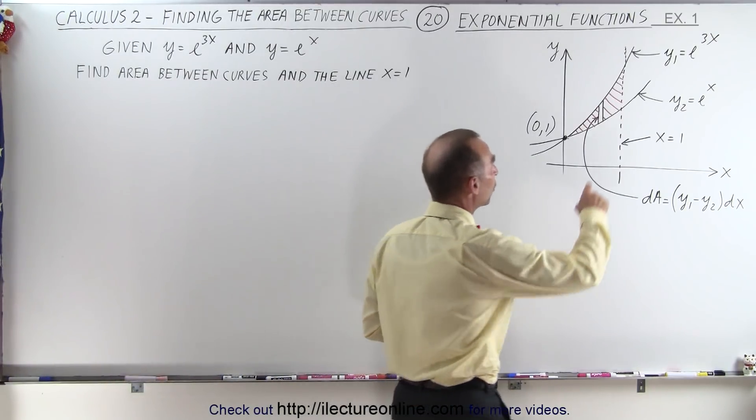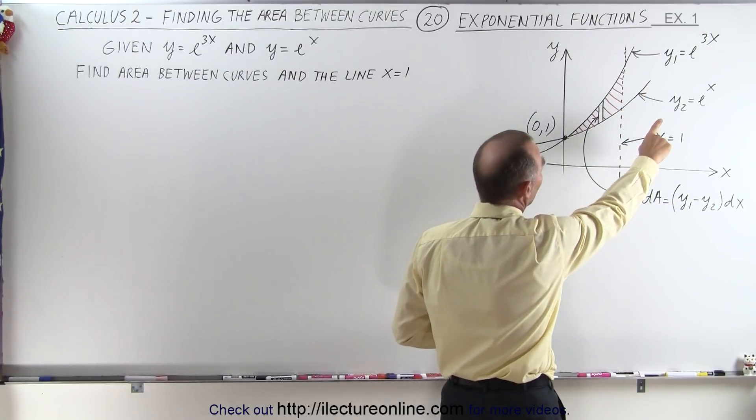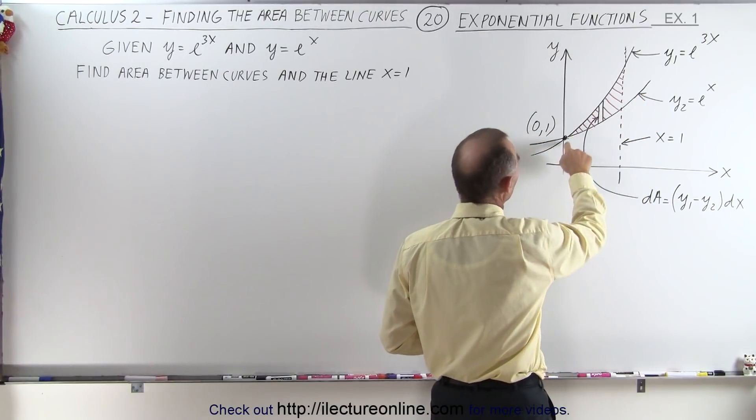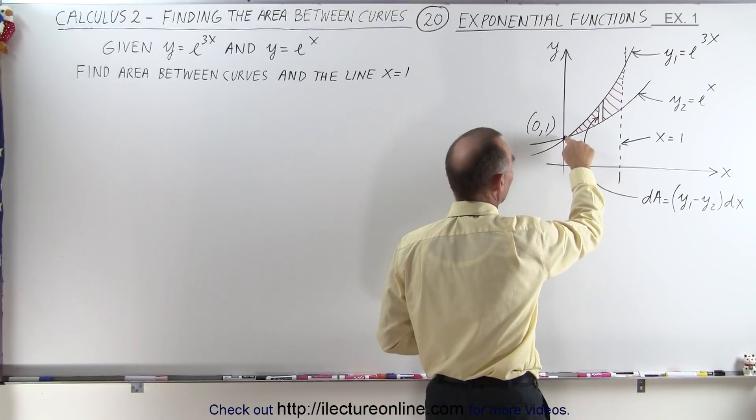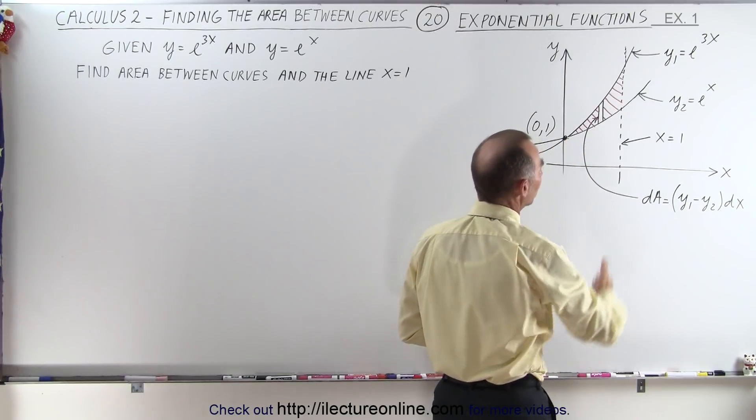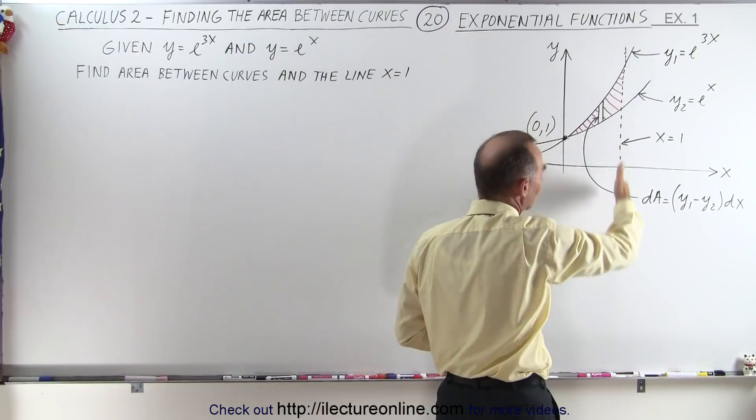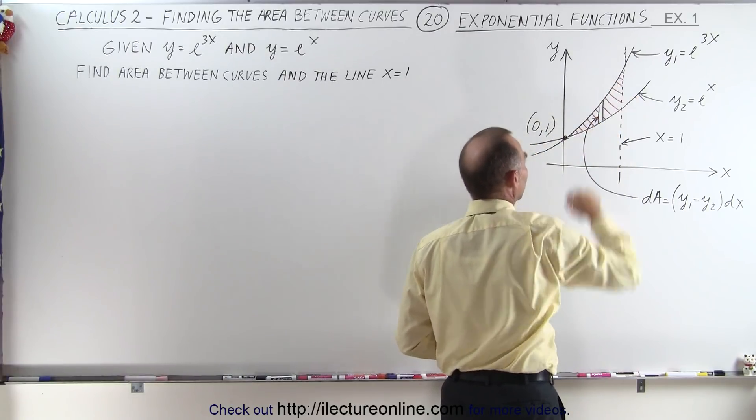The two functions that we have are y equals e to the 3x and y equals e to the x. Both functions cross the y-axis at y equals 1 when x equals 0, and notice it's also bounded by the line x equals 1, so there's the area we're trying to find.